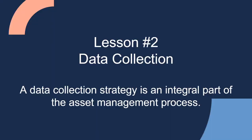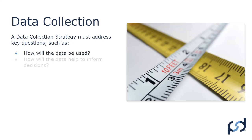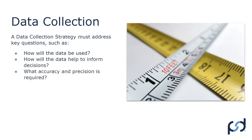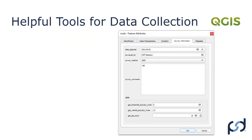So let's move on to lesson number two: data collection. A data collection strategy is an integral part of the asset management process. A strategy must address key questions such as: How will the data be used? How will the data help inform decisions? What accuracy and precision is required? How will you collect the spatial data — are you using RTK, GPS, a total station, aerial photos, converting CAD drawings into GIS data, or something common like being handed an Excel table or CSV file containing latitude and longitude coordinates? And who will collect the data — will they be well-trained, or students with GPS units? What kind of GPS will be used? All these things have to be considered.